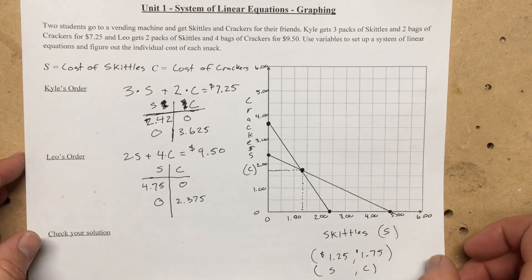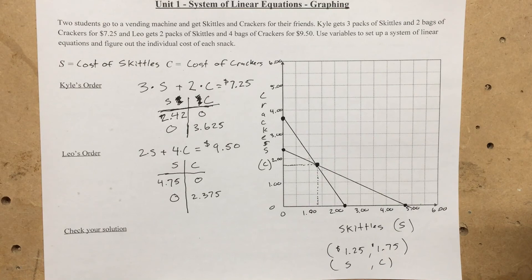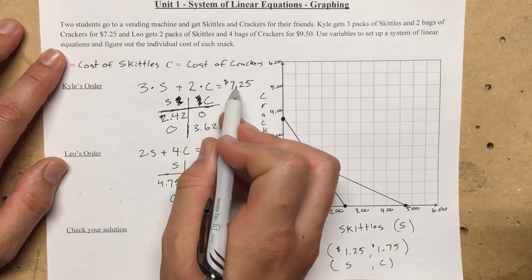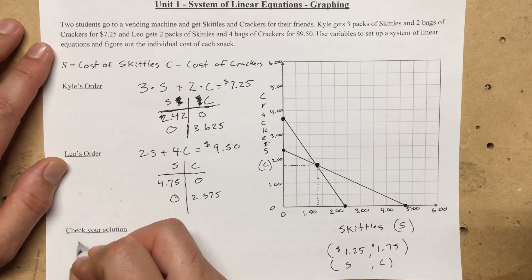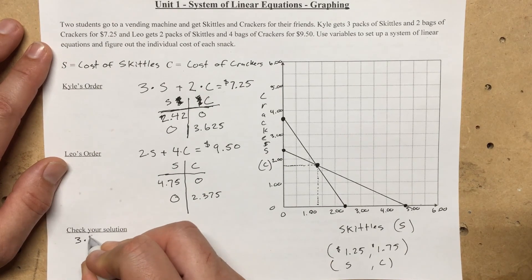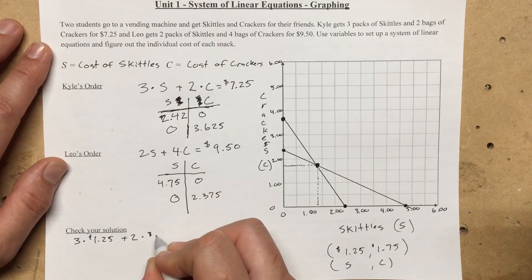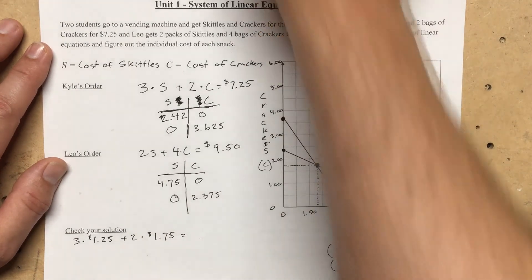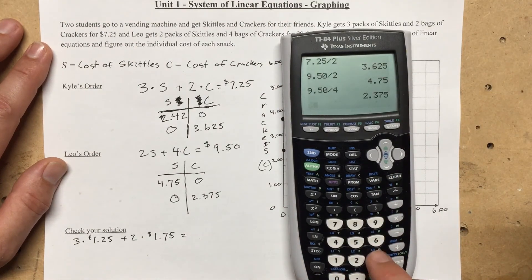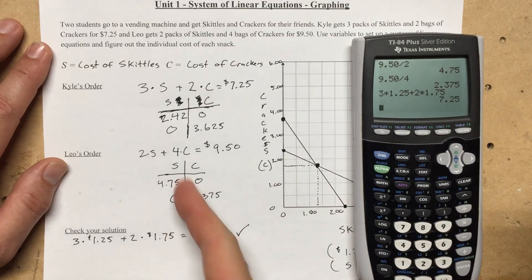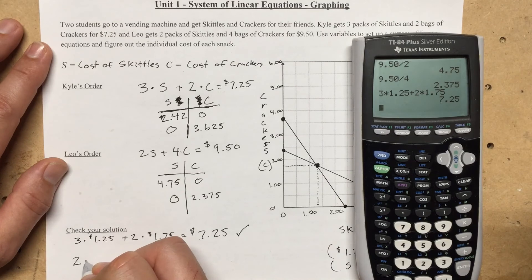Now we're going to check our solution manually. To check the solution properly, we plug our solution into the equation and make sure we get the right cost. For Kyle's order, he had three bags of skittles at a dollar 25, plus two bags of crackers at a dollar 75. Three times 1.25 plus two times 1.75 equals seven dollars and 25 cents. That checks out.